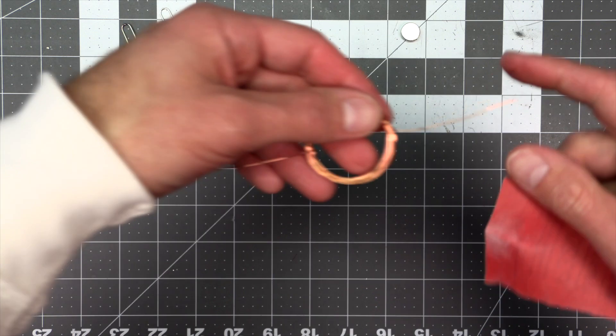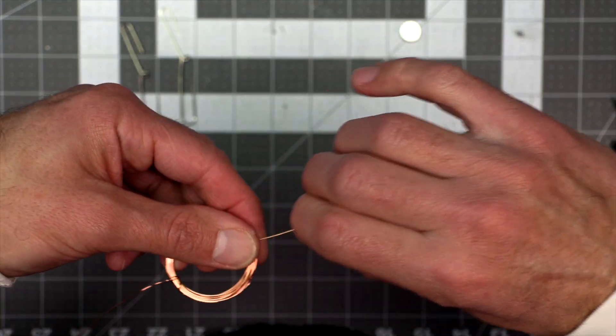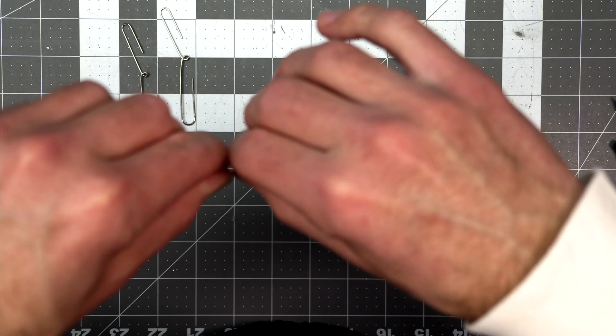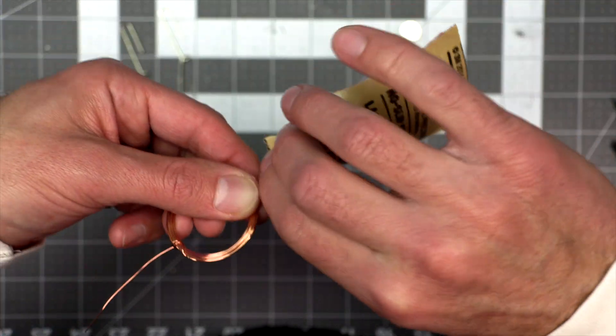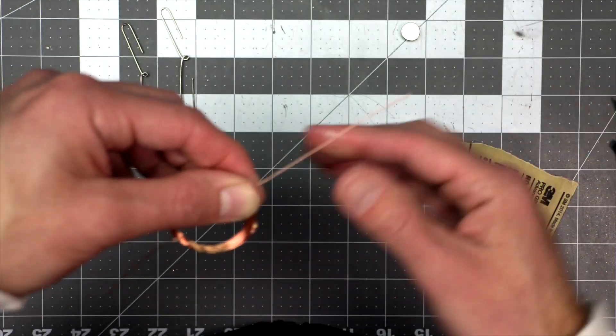Then grab your sandpaper to sand away the insulator on this wire, so it can make an electrical connection with the paper clips. Before you start sanding though, here's an important note.